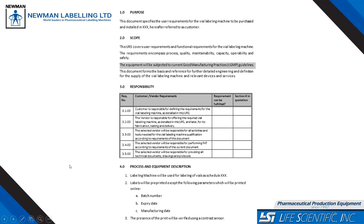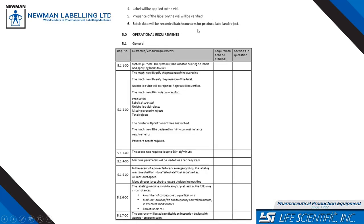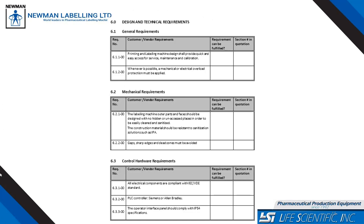When helping you write a URS, we've got purpose, scope, responsibility, process, and equipment description — all of which you review and add whatever criteria you see appropriate. What should be well defined is not only the equipment description, but the process, so that we as the manufacturer have a really good understanding of how this equipment is going to be used. Getting the operators involved in the process description can be very helpful. Our pre-quote survey will help generate a detailed equipment description.